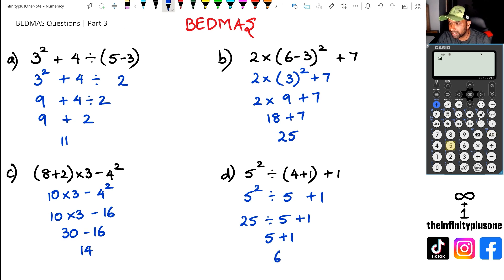Again, let's just check this out in the calculator. So we've got five squared divided by four plus one, and then we've got to add one onto the end of that. And as you can see, that equals to six.